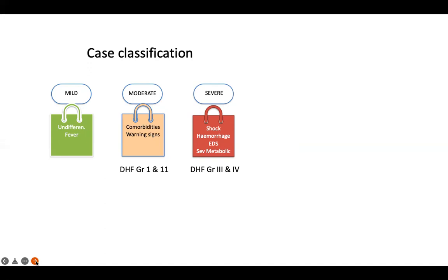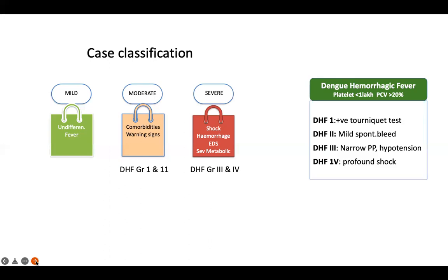Dengue hemorrhagic fever means the patient has thrombocytopenia — platelets less than 1 lakh — with a PCV rise of more than 20% from baseline. DHF grade 1: positive tourniquet test without overt bleeding. DHF grade 2: mild spontaneous skin bleeds. DHF grade 3: narrow pulse pressure or hypotension with palpable pulses. DHF grade 4: profound shock with absent pulses.